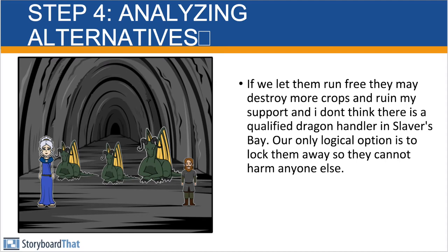Step four, once you have generated alternatives, is to analyze those alternatives. She simply cannot just let them run free because all they're going to do is continue to eat all the cows and crops and kill all the goats. That's a surefire way to lose the support of all of her people. She sends out people to look for dragon handlers. The data comes back and they realize that there are no dragon handlers in Slaver's Bay — all the dragon handlers have been eaten by the dragons and there's just not an abundance of them anymore. So that option is not viable. It looks like the only option they have left is to keep the dragons in a cave underneath the castle.